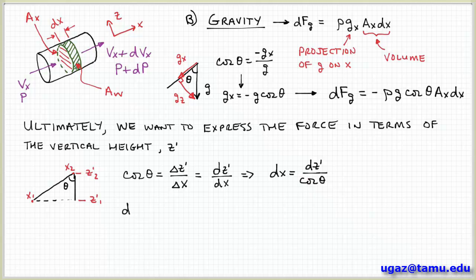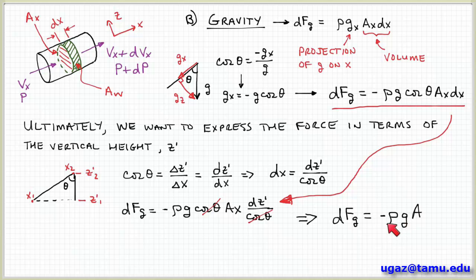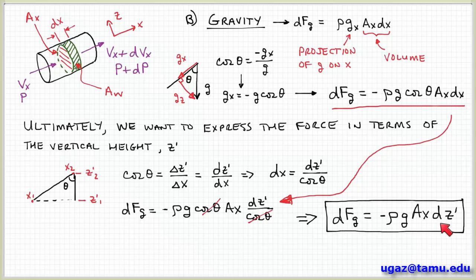So now I can substitute that in. So I substitute in for dx in our expression for the gravity force as shown here. Then I get that the net gravitational force on our system is equal to minus ρg cosine θ A_x times dx, which is dz prime over cosine θ. These cosine θ terms cancel.